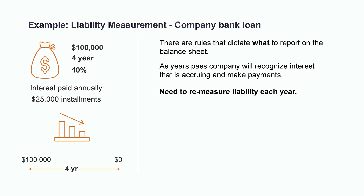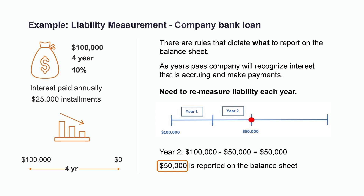However, as the years pass, the company will be recognizing all the interest that is accruing and making the installment payments to the bank. The reason this is important is because each year that the company produces financial statements, over the four years, they'll need to re-measure the liability to reflect the updated amount owing. For example, if we keep the interest out of this for now, at the end of year two, the company would have made two installment payments of $25,000 each for a total of $50,000. If we take the original $100,000 and subtract the $50,000 that has now been paid back, that brings us to a new liability measurement of $50,000. This is the amount left on the loan and the number that we would report as the value of the liability on the company's updated balance sheet at that time.